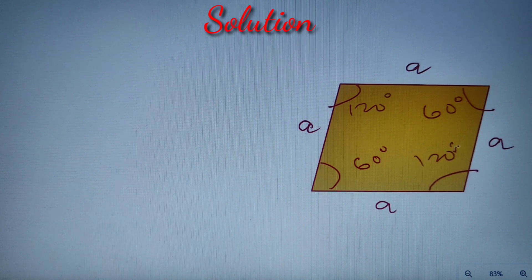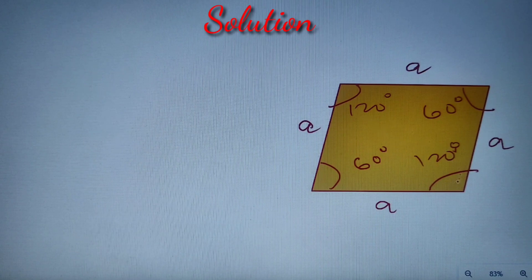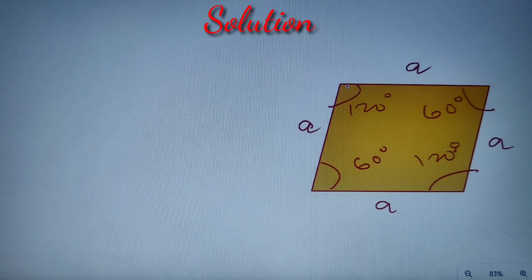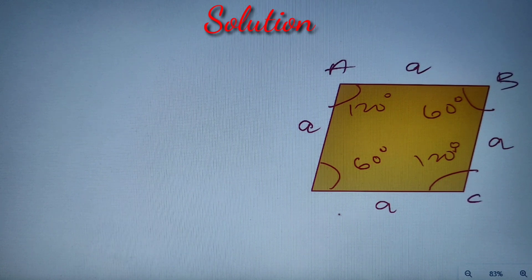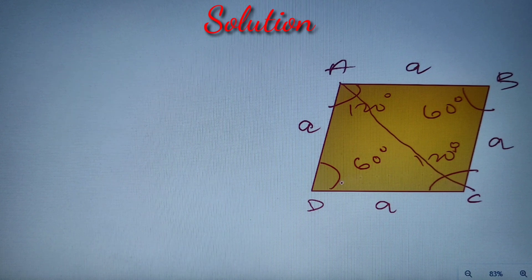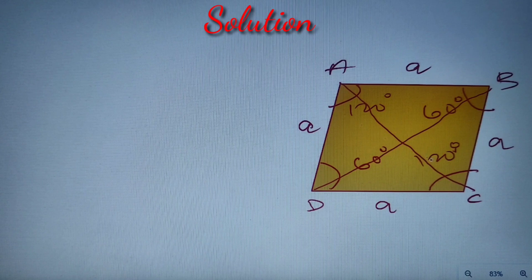This angle is also equal to 120 degrees. Now we have to find the ratio of the shorter diagonal to that of the longer diagonal. So if we name the points as A, B, C, and D respectively, then I can say that one of my diagonals is equal to AC and the other diagonal is equal to BD. Now I don't know which is the longer and shorter diagonal, but after finding out the values of AC and BD we'll get to know that as well.